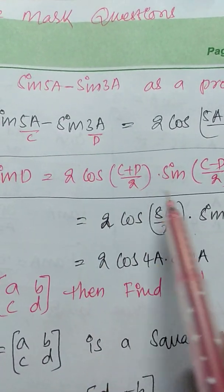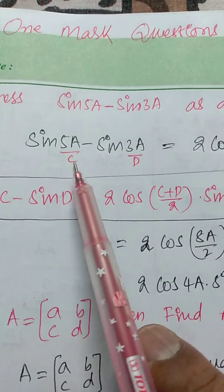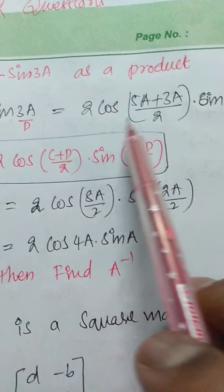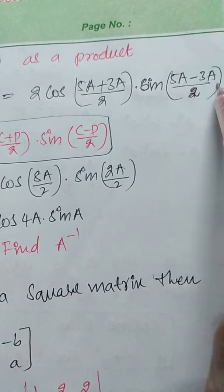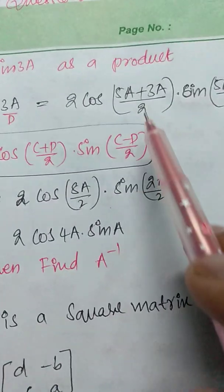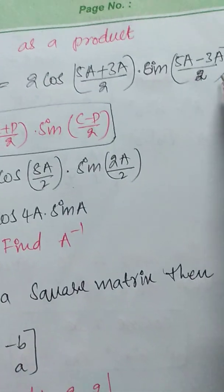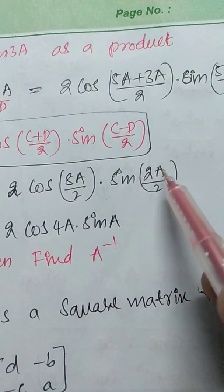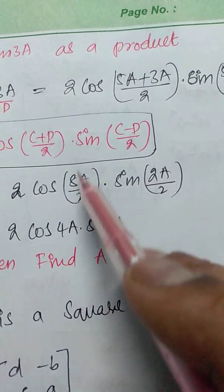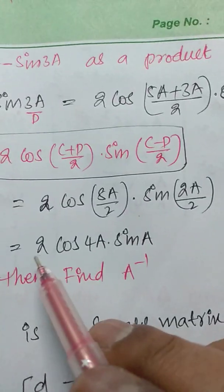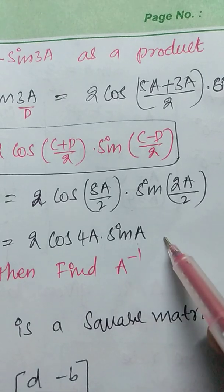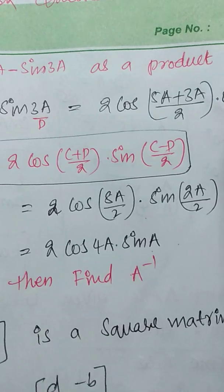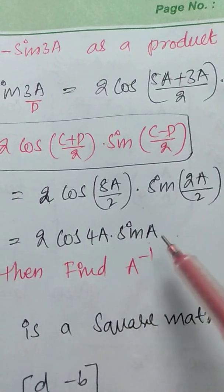Sin C minus sin D is equal to 2 into cos of (C plus D)/2 into sin of (C minus D)/2. Here C is 5a and D is 3a. Substituting: 2 into cos of (5a plus 3a)/2 into sin of (5a minus 3a)/2. 5a plus 3a is 8a by 2, and 5a minus 3a is 2a by 2. We get 2 into cos 4a into sin a. Therefore, sin 5a minus sin 3a as a product is 2 into cos 4a into sin a.